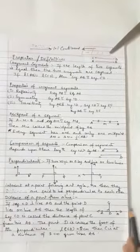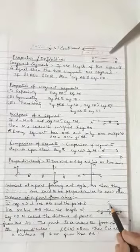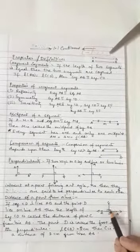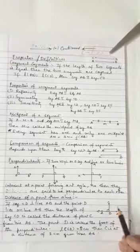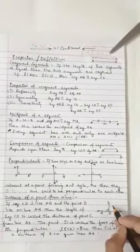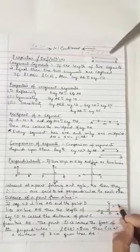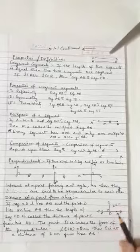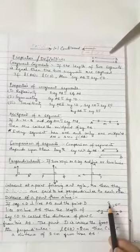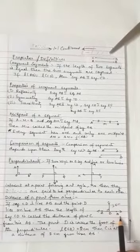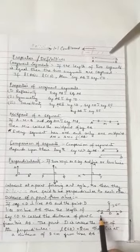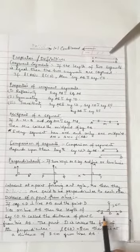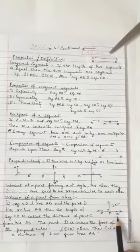Now suppose if I take length CD as 2 cm, this shows that point C is at a distance of 2 cm from line AB.